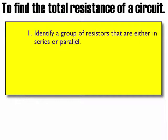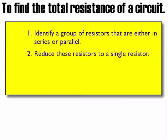The first step is to identify a group of resistors that are either in series or parallel, so hopefully if you've been following so far, you can do this. The next step is to reduce these resistors to a single resistor, and then to redraw the circuit with this new single resistor as its change.